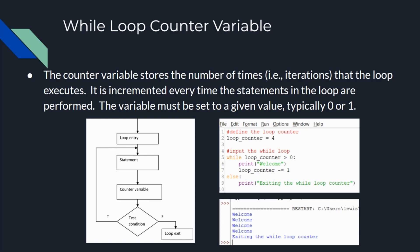A counter variable stores the number of times, also known as the iterations, the loop executes. The counter variable is incremented every time the statements in the loop are performed. The variable must be initialized to a given value, typically to 0 or 1. The first time the statements in the block are performed, the loop counter variable starts with a value equal to 1. The second time through the loop, the variable has a value equal to 2. The third time through the loop, it has a value of 3, and so on. Eventually, the counter variable will have a value equal to the maximum number and the loop will terminate.